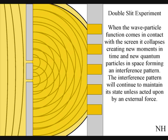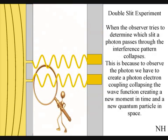When the observer turns on a detector to determine which slit a photon passes through, the interference pattern collapses. At that moment in time, the interference pattern disappears, because to observe the photon, we have to create a photon-electron coupling, collapsing each wave-front into a new quantum particle that will have its own position in space and time.